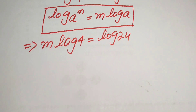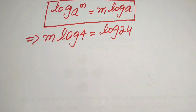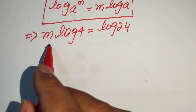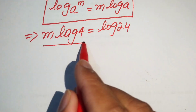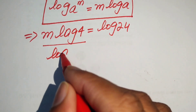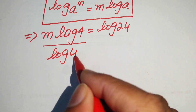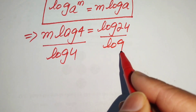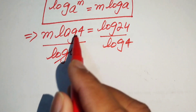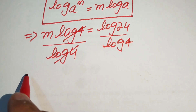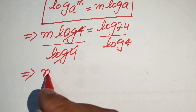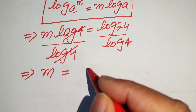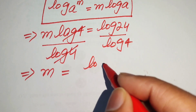After this step, we need to divide both sides by log 4. When we divide both sides by log 4, this log 4 cancels out with the other log 4, and it is written as m is equals to log of 24 divided by log 4.